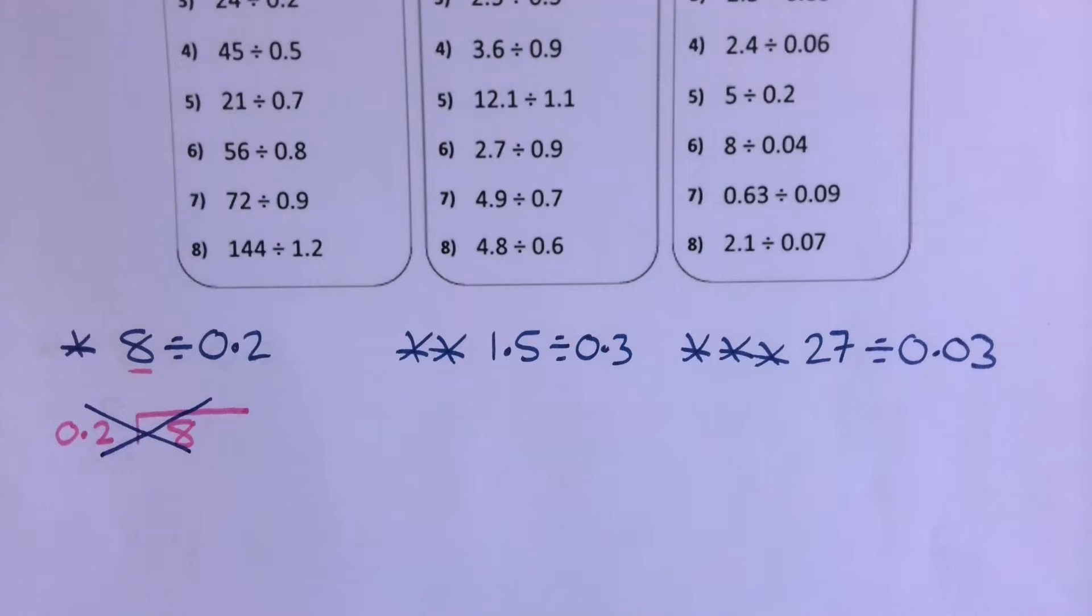So if we write this calculation as a fraction, 8 divided by 0.2 can be written as 8 over 0.2. This bar here means divide. You can see that we've got a fraction with a decimal in it, and we know that we don't like fractions with decimals in them. So really our problem is actually this bottom one, the denominator. So what do we need to do to make the denominator a nice number?